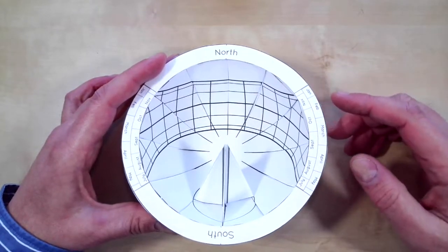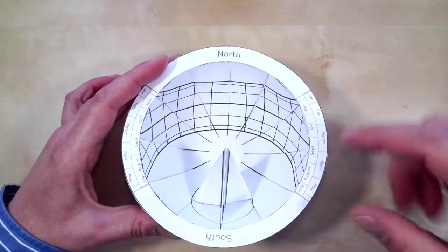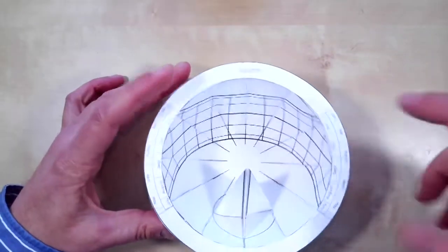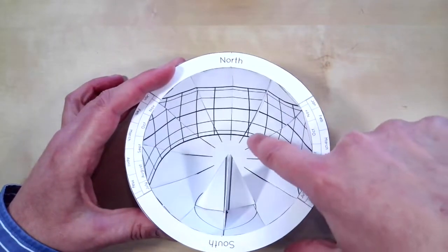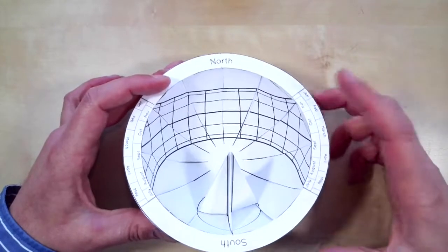On the winter solstice, the shadow should follow this curve. And on the summer solstice, the shadow should follow that curve. And then I've got the other lines in between, one month intervals between the equinoxes and the solstices.